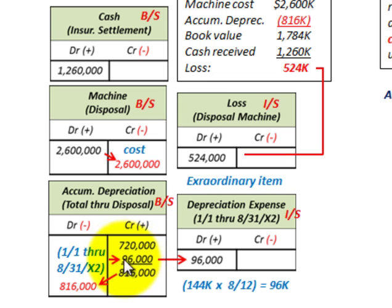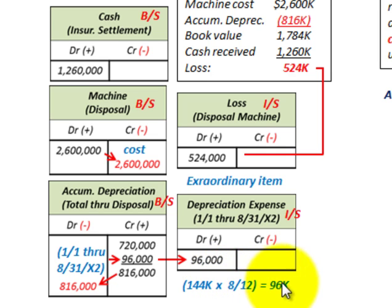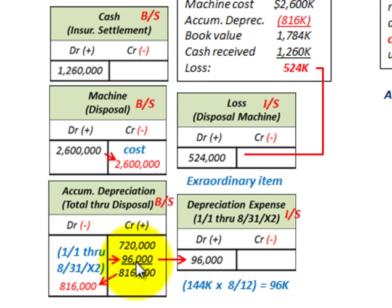We first calculate the depreciation for the year from January 1 through 8/31/X2. That's simply $144,000 per year times 8/12ths, or 8 months, giving us $96,000. We would credit accumulated depreciation by $96,000 and recognize depreciation expense on our income statement for $96,000. The total accumulated depreciation would then be $816,000, which we take off the books.